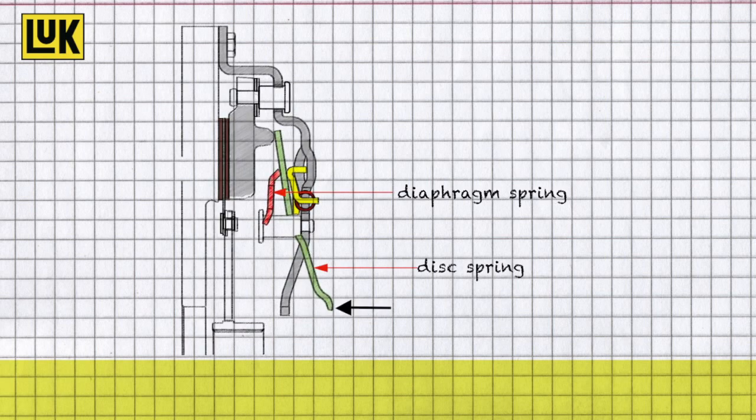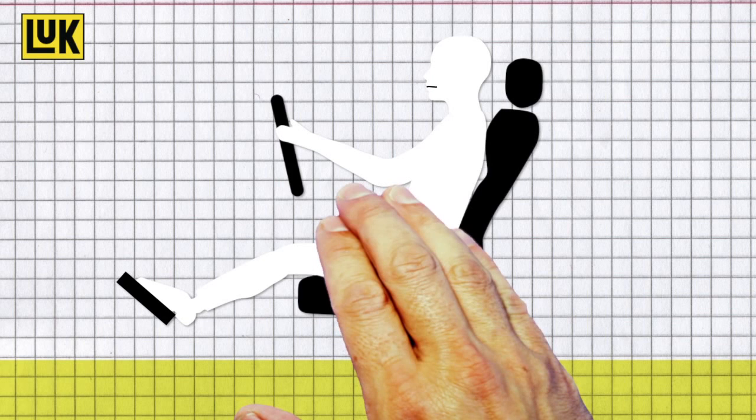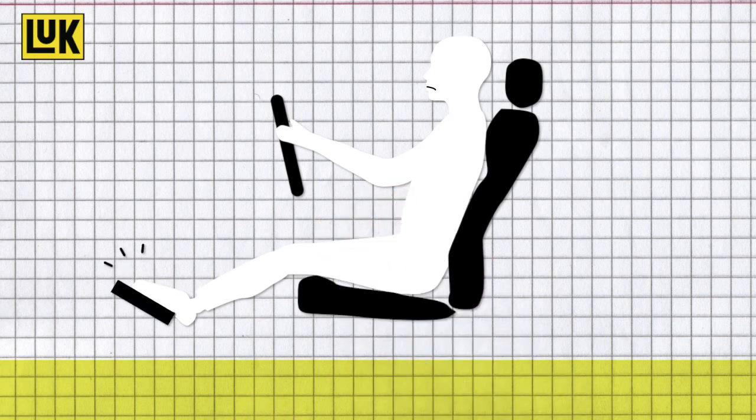The diaphragm spring in the clutch pressure plate compensates for this and adjusts accordingly to ensure further function. However, the conventional clutch construction means the driver will need to apply more and more pedal pressure as wear increases.